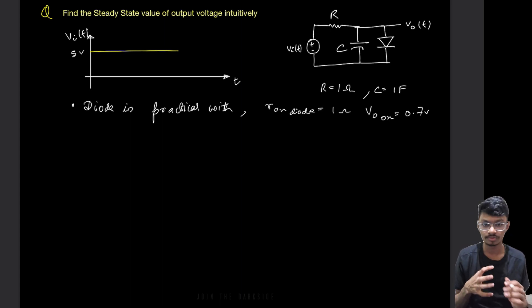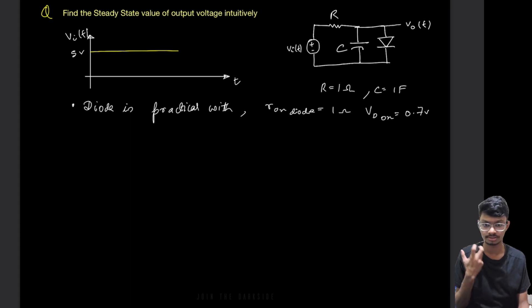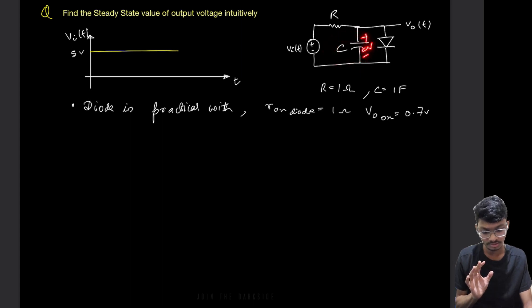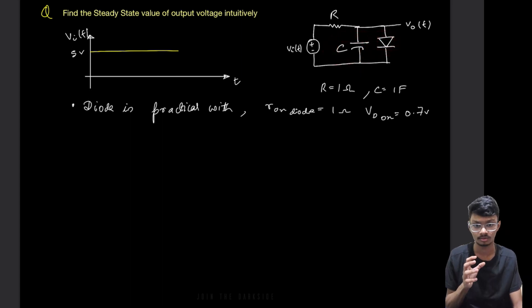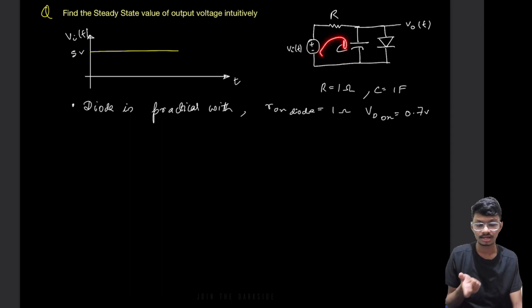How should we start this question? We know the initial charge across the capacitor is zero, so the initial voltage across the cap will be zero. If the voltage across the cap is zero, the voltage at the diode anode is zero, hence the diode cannot turn on because it needs a minimum of 0.7V to turn on.